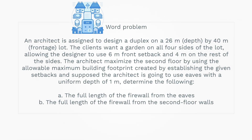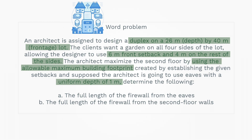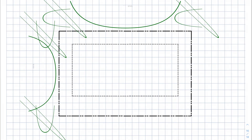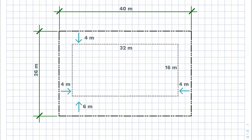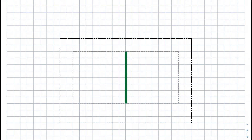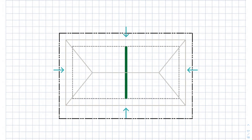Let's go back to the problem and highlight the essential data that we can use. Now we can visualize the problem into a two-dimensional drawing. After establishing the constraints, we are left with an allowable building footprint with 16 meters depth and 32 meters width. Let's put a centerline in the center that divides the lot into two equal parts. As we've read in the problem, we need to establish eaves with one meter depth on all four sides of the building. Eaves will affect the dimensions of the firewall, so make sure you consider this.